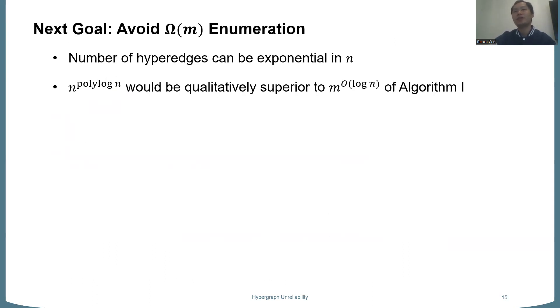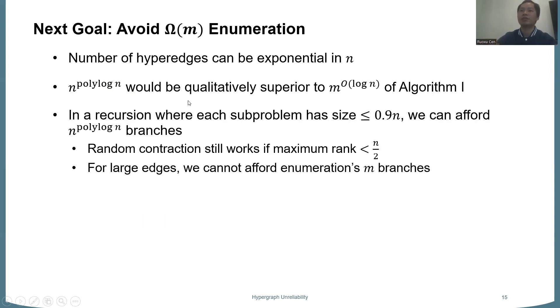And now in the second algorithm, our goal is to improve running time from m^{log n} to n^{poly log n}. Recall that because m can be exponentially larger than n, so this second running time will be quite a bit better. And we still want to follow the same framework, which means we want a recursion with still log n depth. And so we can afford n^{poly n} branches. But we cannot afford m branches, which happens in the enumeration. And this means our random contraction will still work if we have bounded rank. But we need something more for large edges. And recall that the number of large edges. So the bad case seems to be when most of the edges are large.